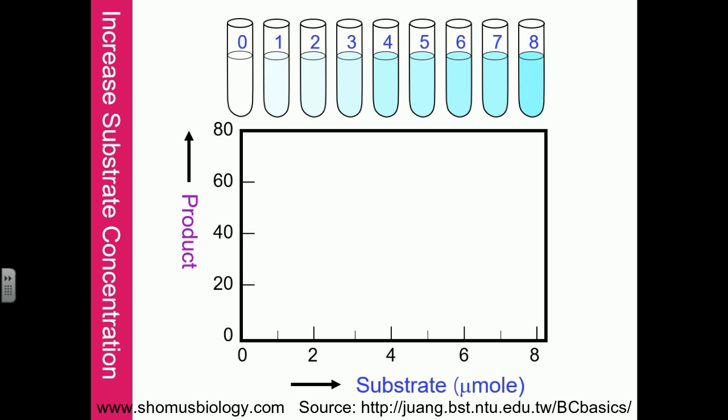The y-axis shows the amount of product formed. We have a series of test tubes containing different substrate concentrations. The idea is: substrate plus enzyme yields product P. These reactions are carried out for a fixed period of time to understand the requirement of substrate concentration in the process.